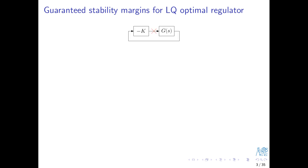We consider a feedback interconnection of a system, or plant, represented by the G block, and a state feedback controller represented by the K block. It's understood that at the output of G we have all the state variables.